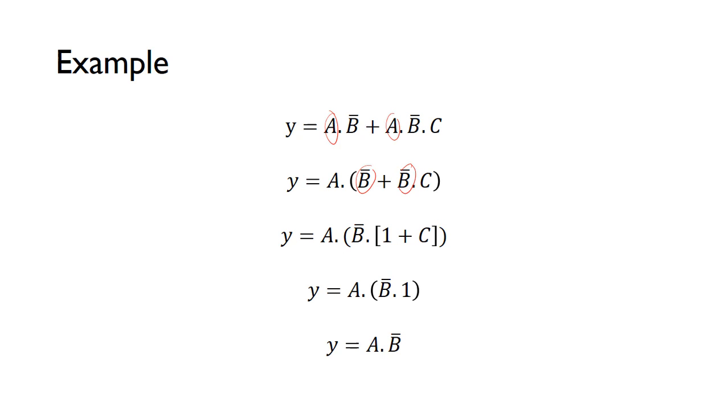You can also do it actually quicker than that. If we look at the first expression at the top, you can see that A and not B is a common factor, so you can take that out right from the beginning. You're left with 1 or C, so we know that's equal to 1, and we're left with this.